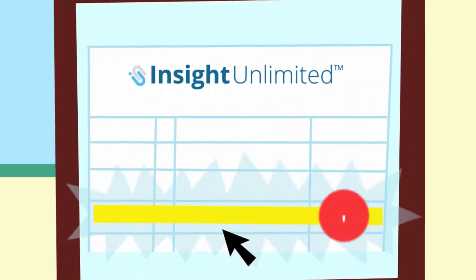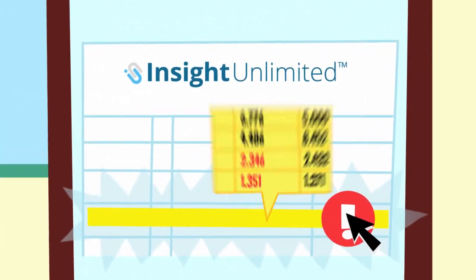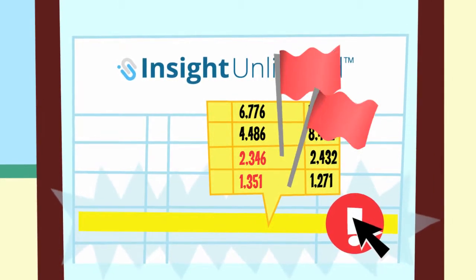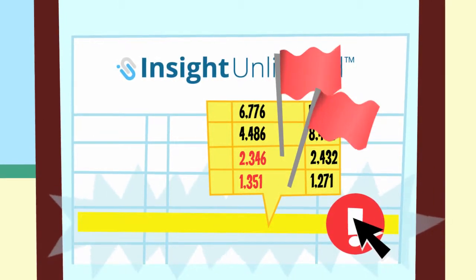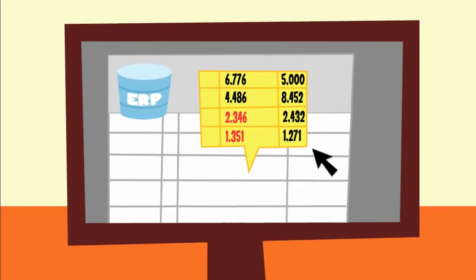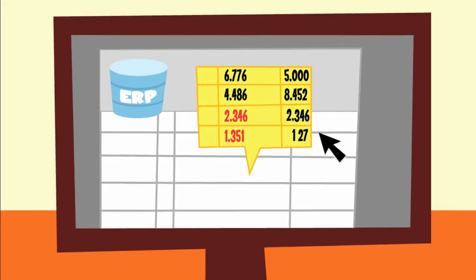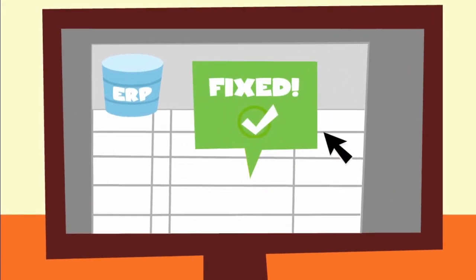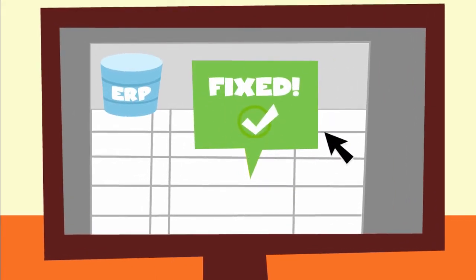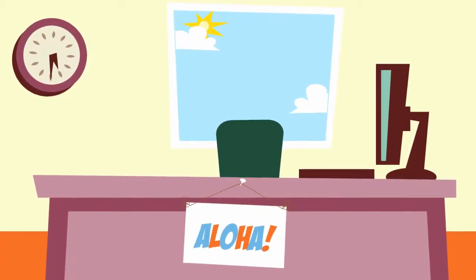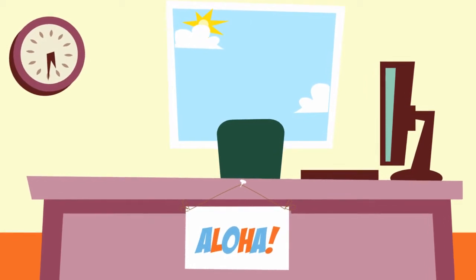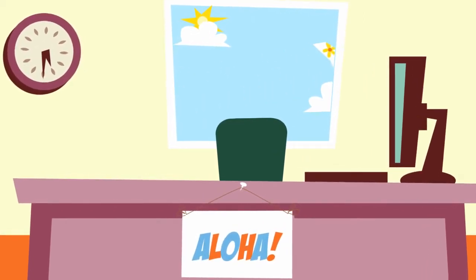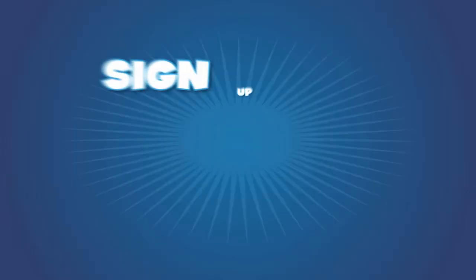Today, Claire sees one highlighted item. She simply clicks on the discrepancy and can instantly see what the problem is. Claire fixes it straight away in her ERP, and she's done. When it's this easy, reconciling the GL to all her subsystems is no longer a monthly activity Claire dreads.